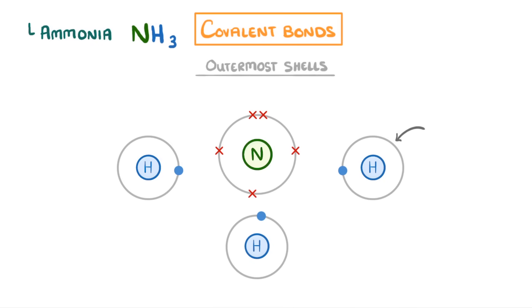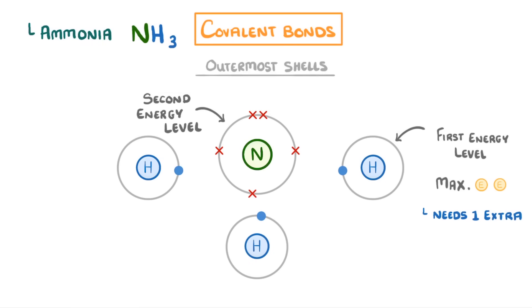Remember that because this is hydrogen's first energy level, it can only hold a maximum of 2 electrons, so each hydrogen is going to need 1 extra electron to fill their shell. Whereas because this is nitrogen's second energy level, it can hold a maximum of 8 electrons, so it's looking for an extra 3 electrons to become full.